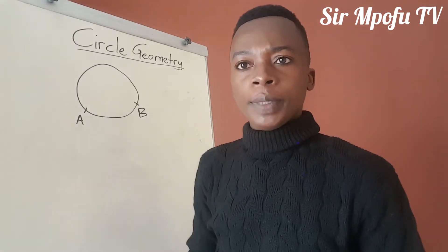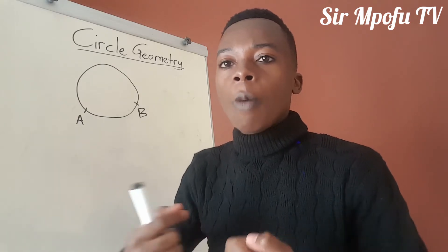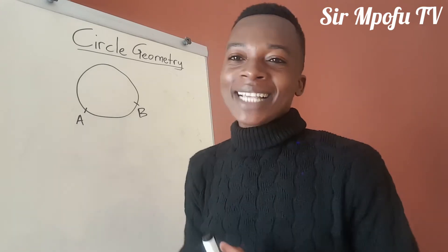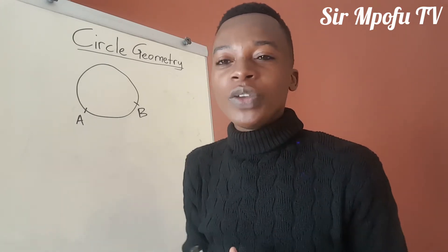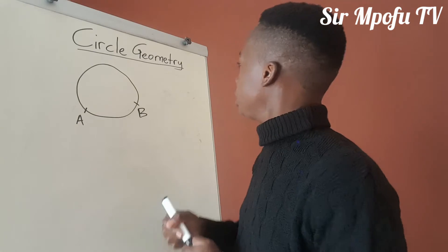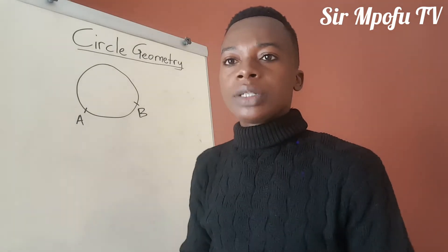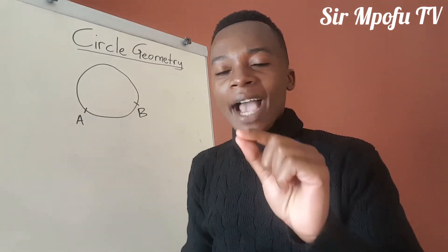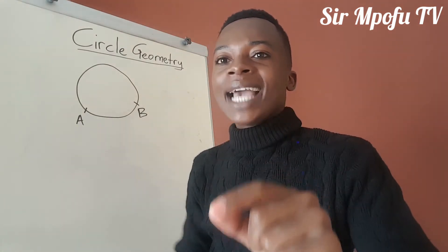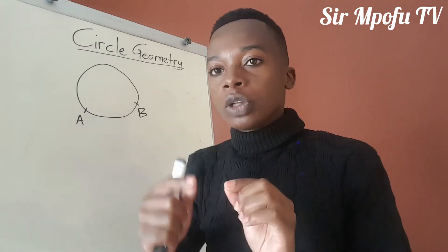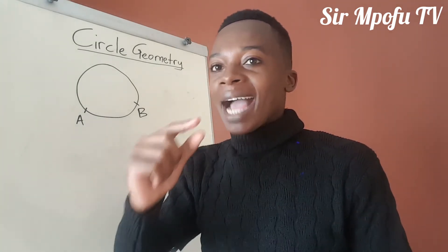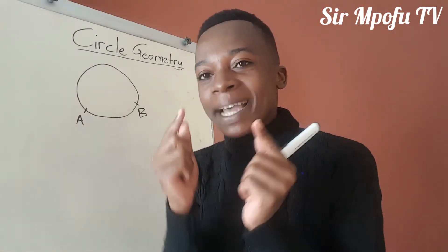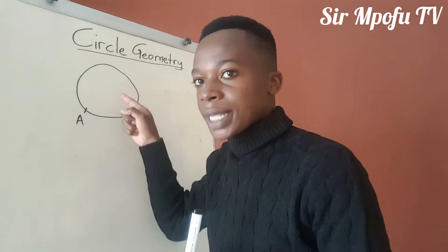There are theorems on circle geometry. These theorems help you to quickly get your angle, or quickly give your answer as you'll be calculating and solving angles inside your circle. Make sure you have a notebook to jot these down. Theorem 1: angles subtended by the same arc are equal at the circumference. If angles are being subtended by the same arc at the circumference, they will be equal.